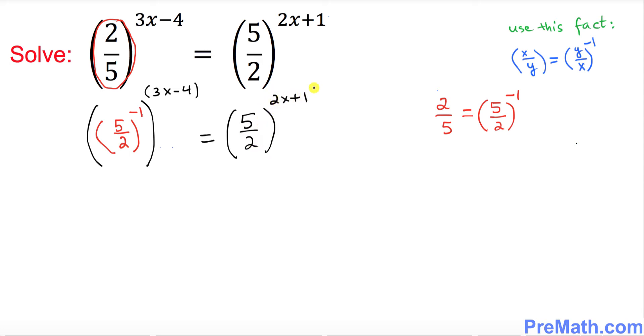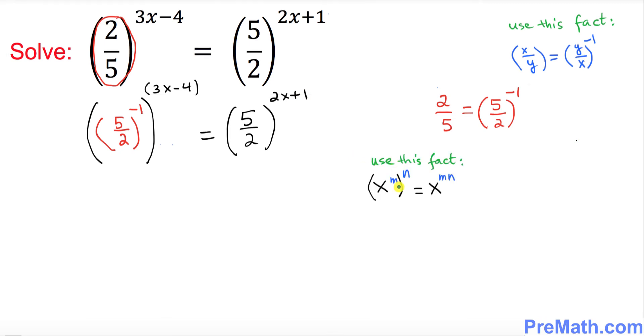Now we're going to be using this fact: if you have x power m and then you have another exponent n, then what happens to these exponents? They multiply out, so they become simply multiplied.